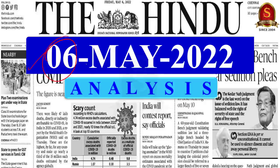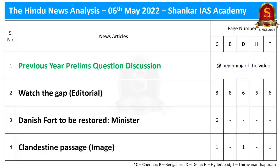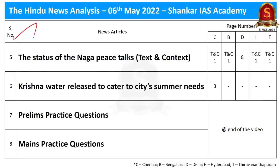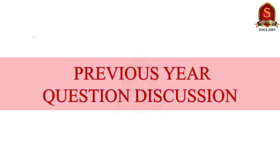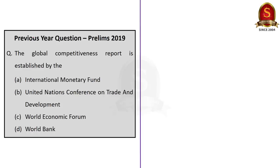Today's date is 6th of May 2022. These are the list of news articles chosen for today's discussion. Without wasting much time, let us get into the previous year question discussion. Today we have one previous year question to discuss.